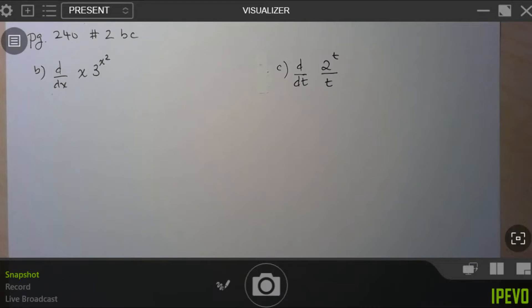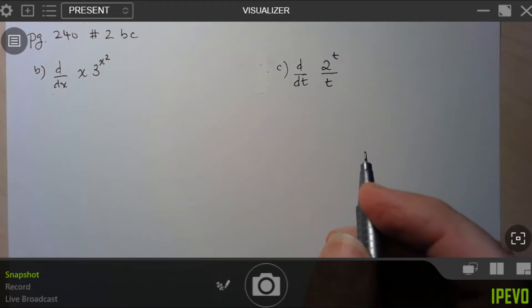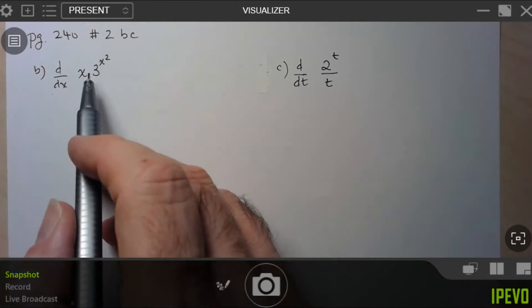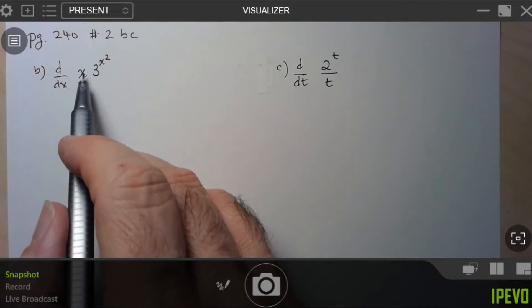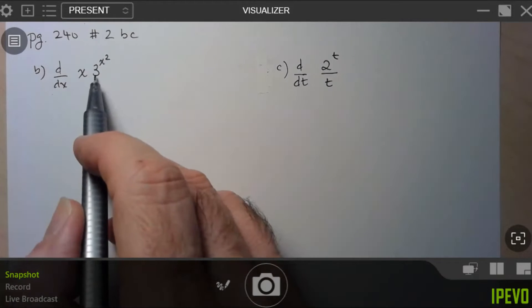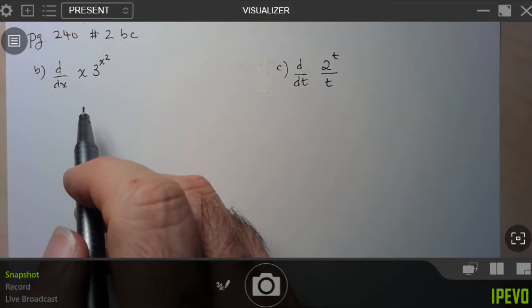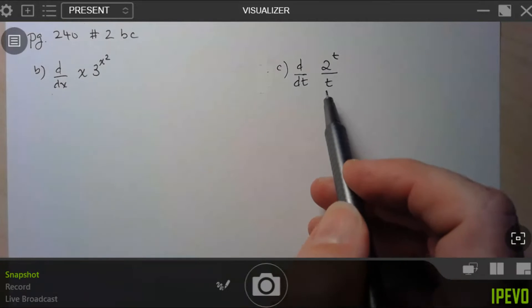Hi folks, we're going to take a look at page 240, number 2b and c. So here we have derivatives that include exponential functions. In this first one, we're going to have to use the product rule because we've got x times this function here, which includes an exponential function. And here we're going to have to use the quotient rule.